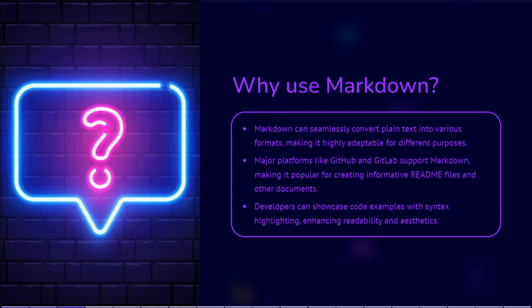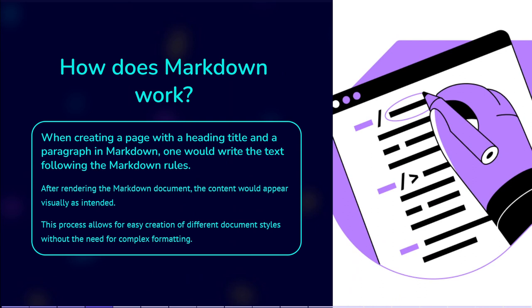How does it work? When creating a page with a heading title and a paragraph in Markdown, one would write the text following the Markdown rules. After rendering the Markdown document, the content would appear visually as intended. This process allows for easy creation of different document styles without the need for complex formatting.